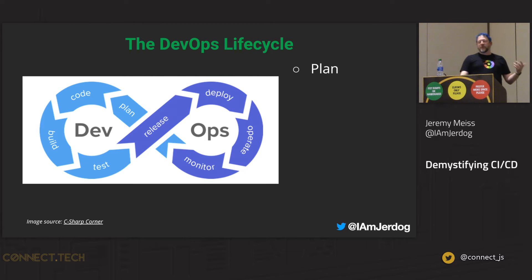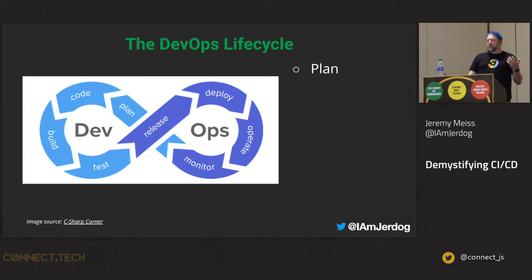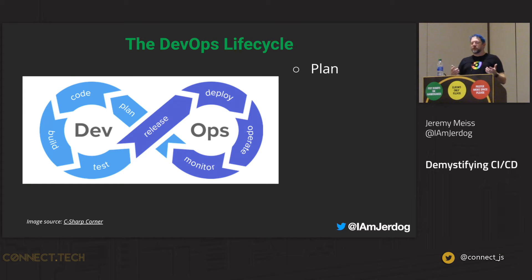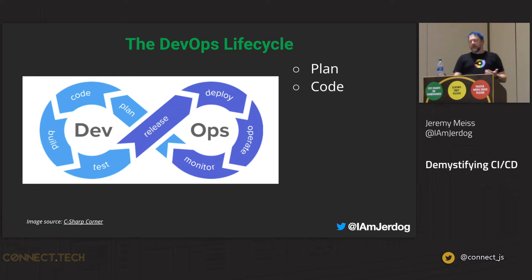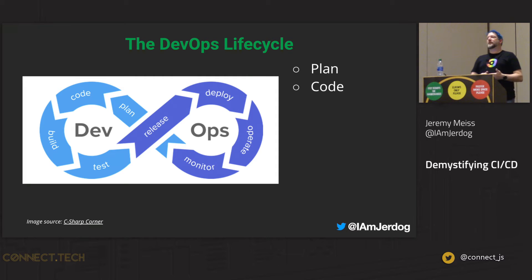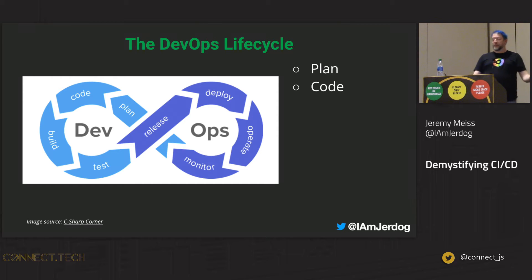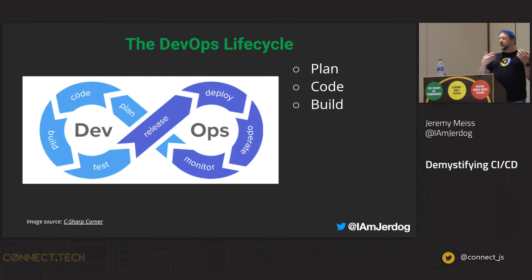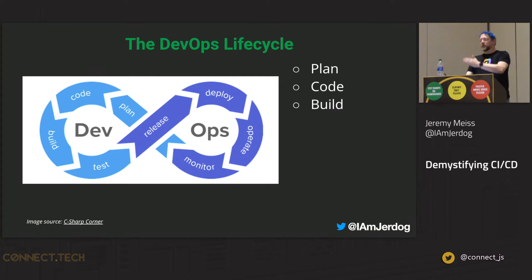The key pieces of the DevOps lifecycle start with planning — the initial plan you're putting together around the type of application you need to develop, building that rough picture regarding the development process. Then you jump into the code — the application per the client or department's requirements, based on the plan you've already made. Then the build: building the application, performing the integration of various code written in the previous step.